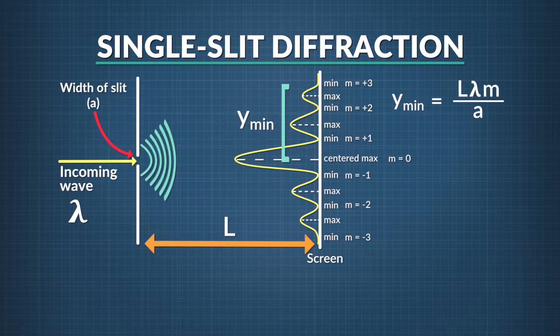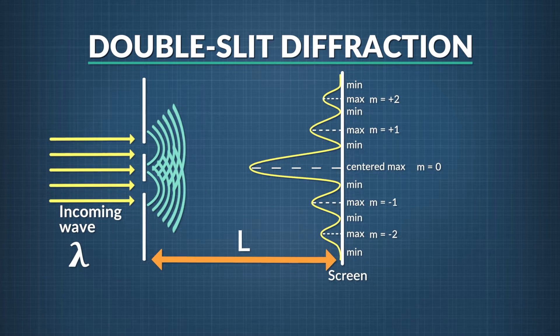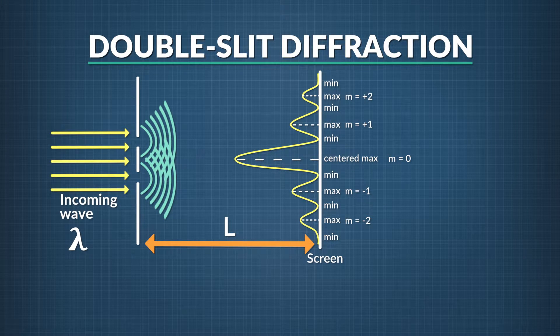This is the equation for minima from a single slit. On the other hand, if our setup has two slits, the equation for intensity maxima, rather than minima, is the same.